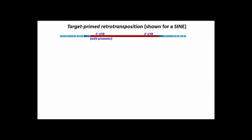Target-primed retrotransposition is typical of a SINE. The enzymes involved in cleaving the target site DNA and in reverse transcription must come from the transcription and translation of genes in a concurrently active LINE.